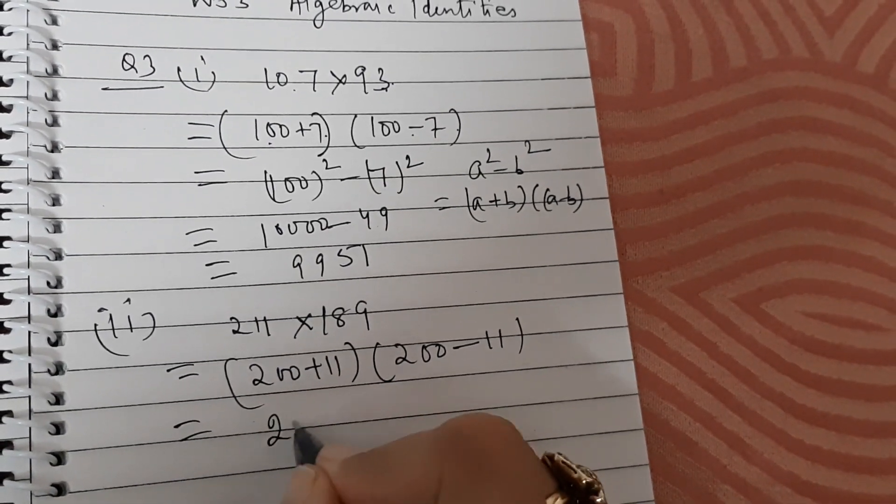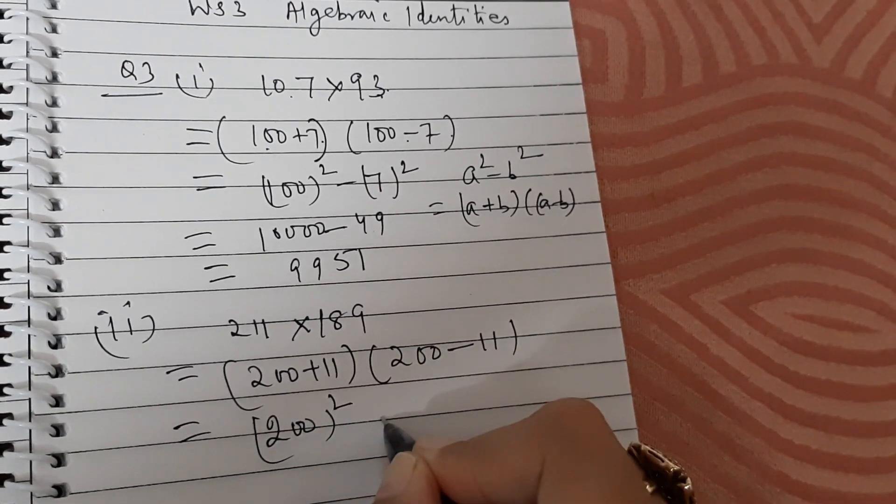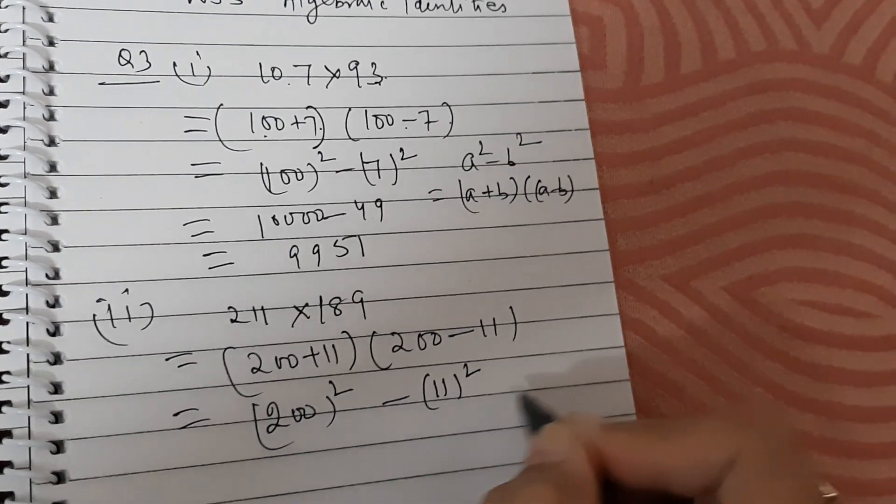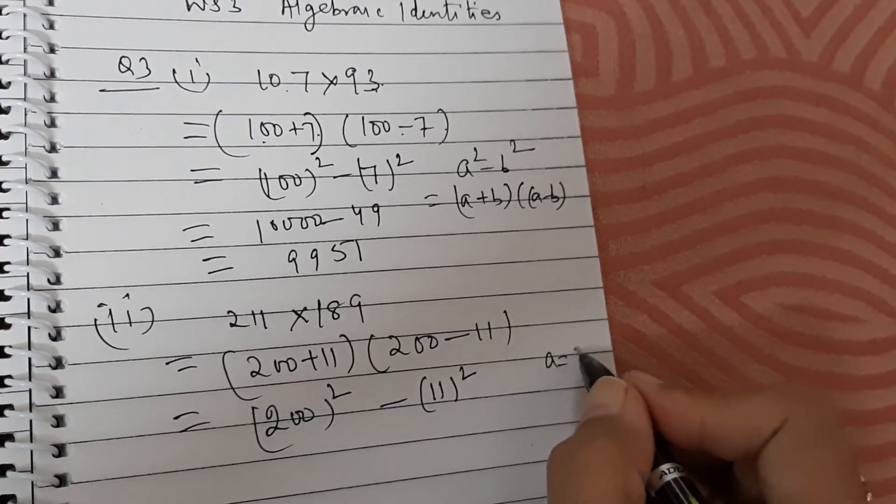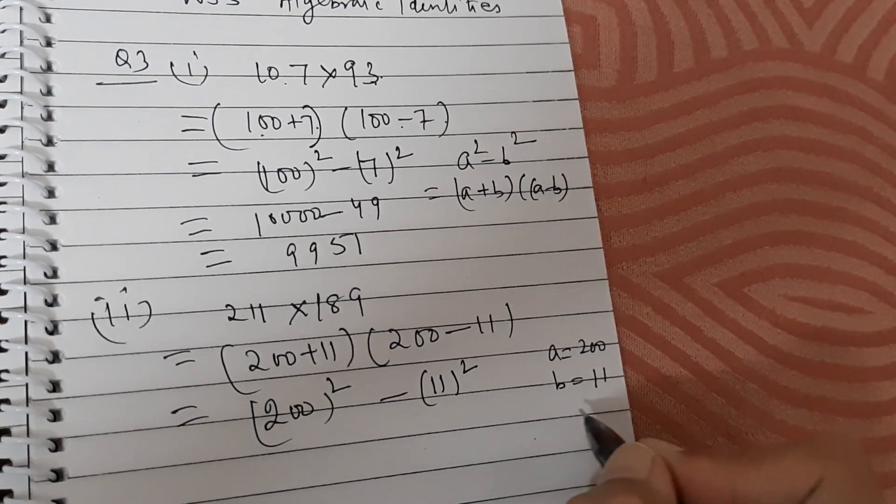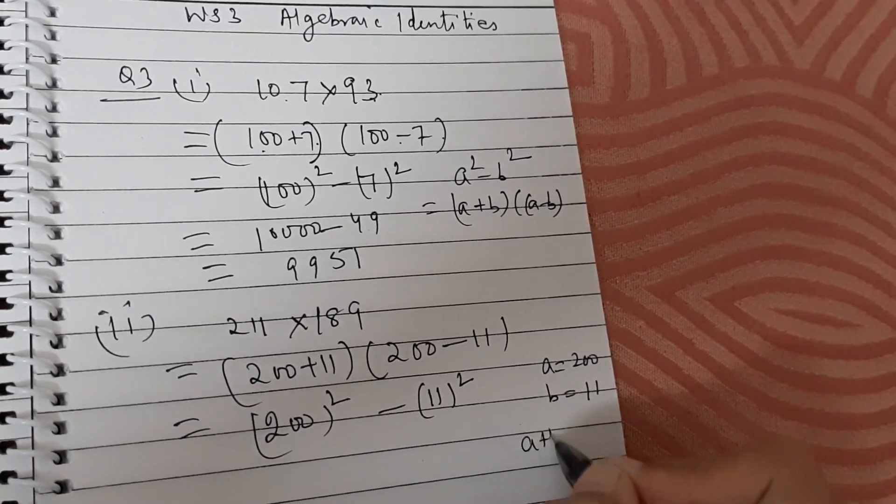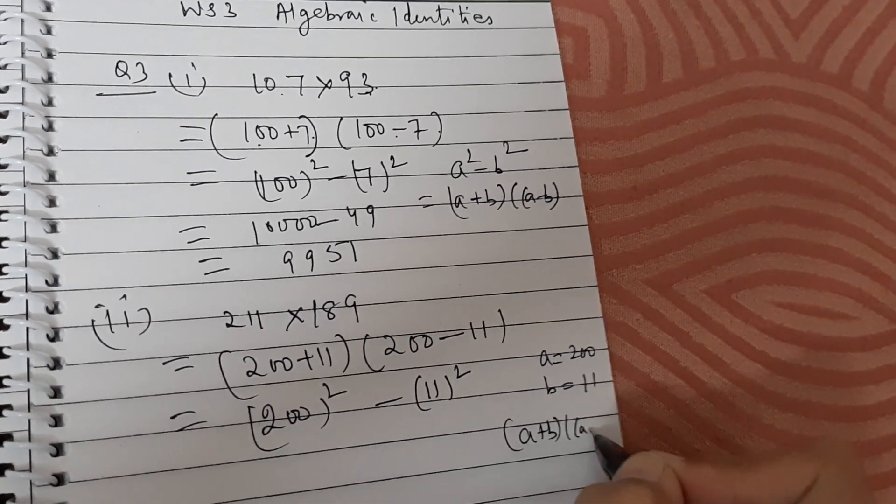This is equal to 200² minus 11². What is a here? A is 200 and what is b here? B is 11. We are using a plus b into a minus b. Remember in examination you have to write it as the reason.